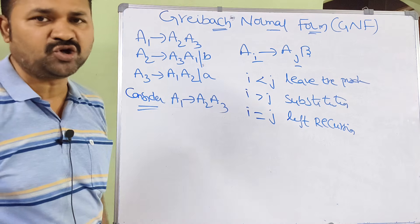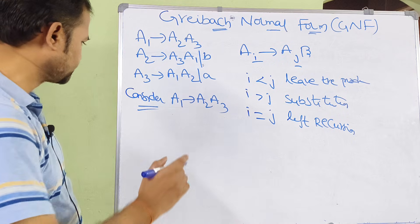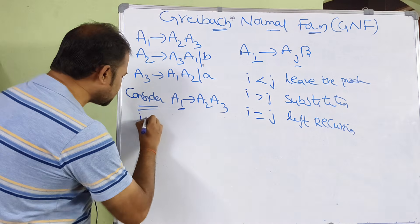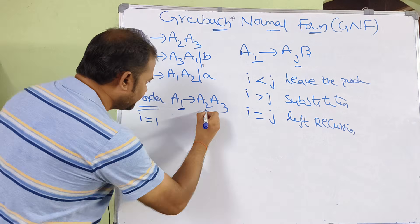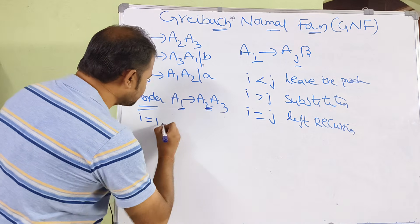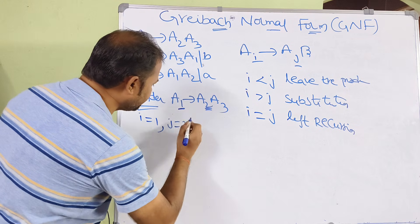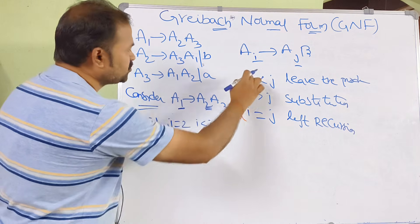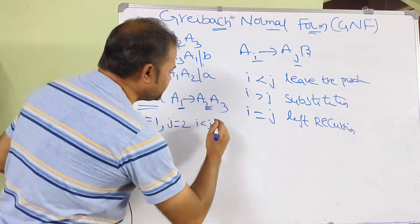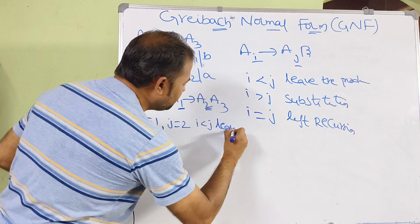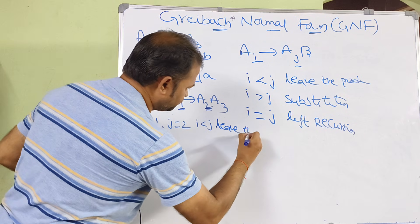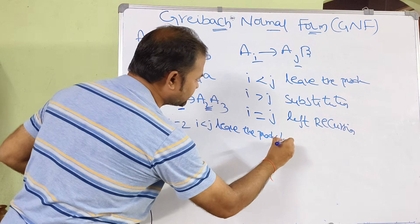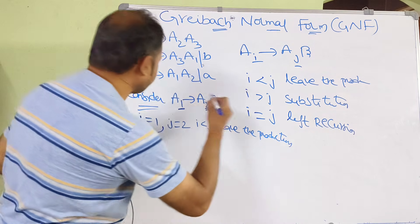We need to follow those three rules. For the first production, A1 produces A2, A3. Here I value is 1 and J value is 2, so I is less than J. Since I is less than J, we leave the production now and do the substitution later.